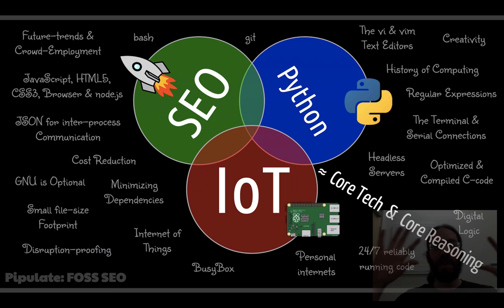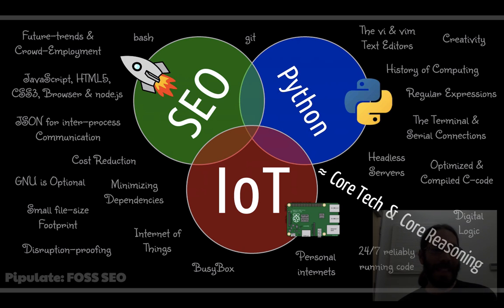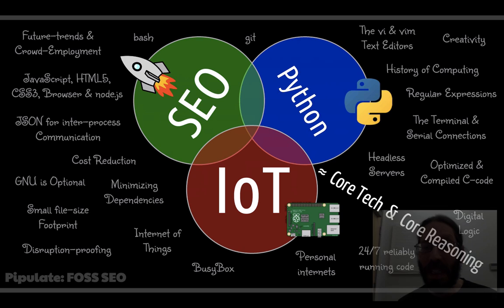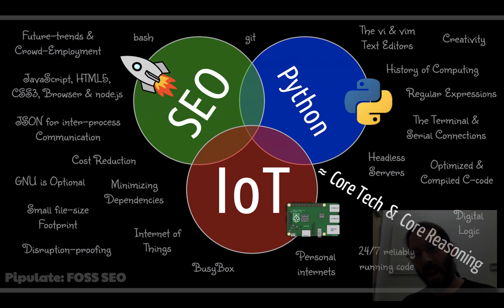There's a lot of other ground to cover if this really is the fourth R of education — it encompasses so many diverse things, each with a kind of requirement of being timeless and highly relevant against a large problem set. That is core technology and core reasoning: how to use that technology well.